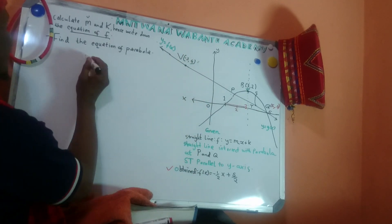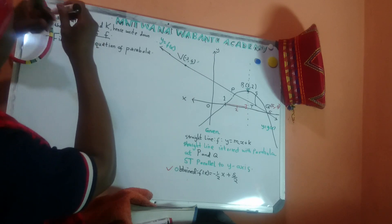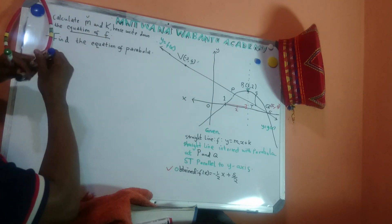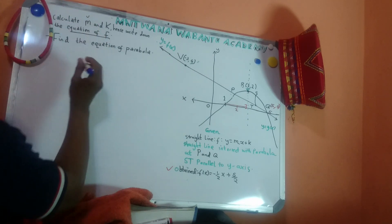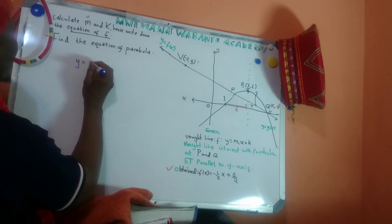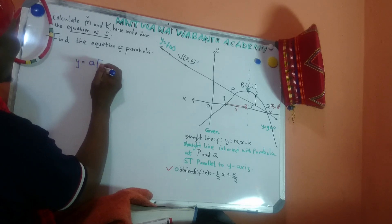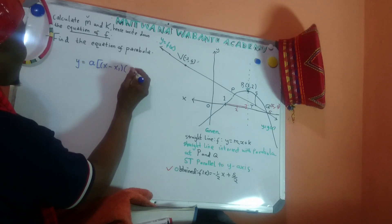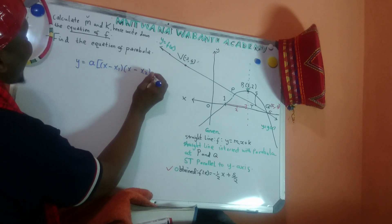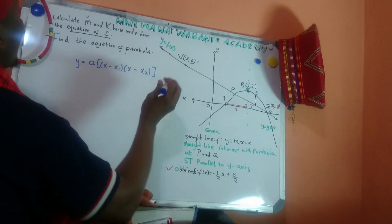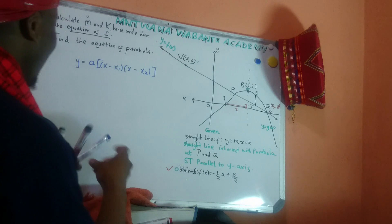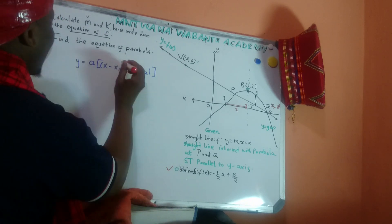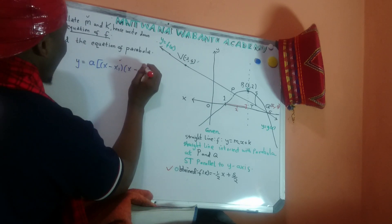So for the first method, I could say y equals a times x minus x1, times x minus x2, where x1 and x2 are the x-intercepts. So x1 and x2 are x-intercepts. What are the x-intercepts? One and five. So I'll say x minus 1, times x minus 5, multiplied by a, equals y.